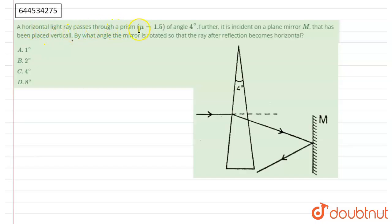According to the question, a horizontal light ray passes through a prism. The prism has refractive index of 1.5 and angle is 4 degrees. Further, it is incident on a plane mirror M that has been placed vertically. By what angle should the mirror be rotated so that the ray after reflection becomes horizontal?